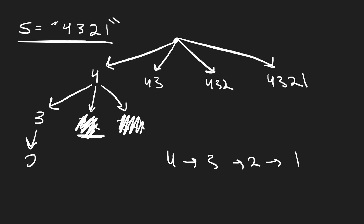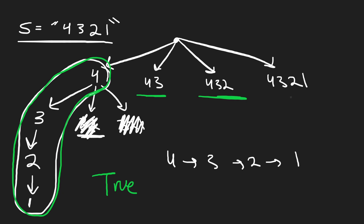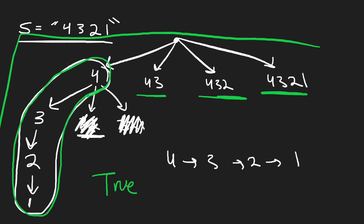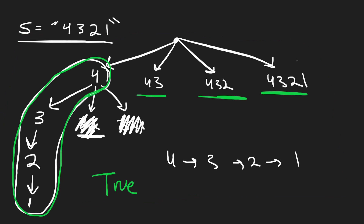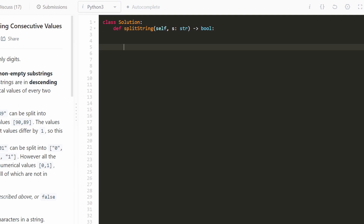So the correct path along the decision tree is 4, 3, 2, 1 — descending by exactly one — and we return true. The other three starting paths won't work. This is just a visualization of the backtracking decision tree: we brute-force every possible path, and if any of them work out, we return true.